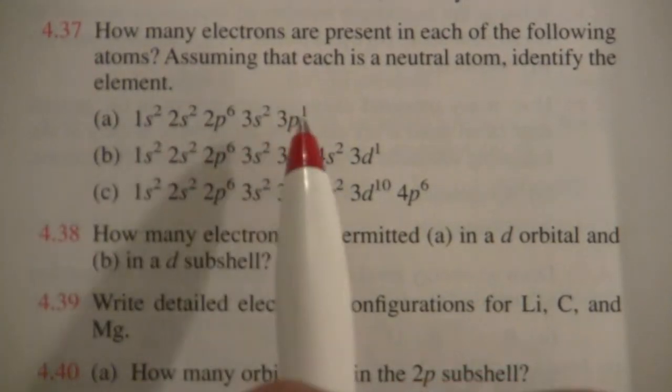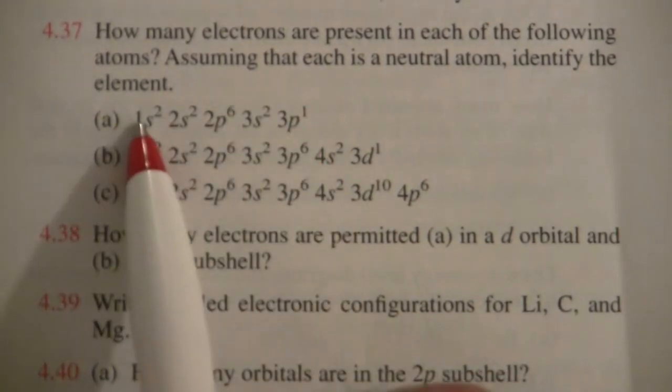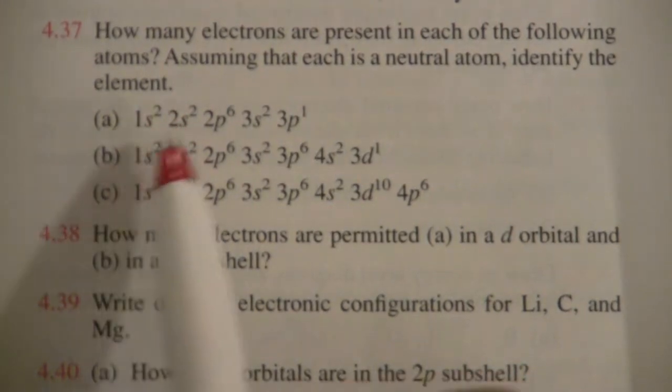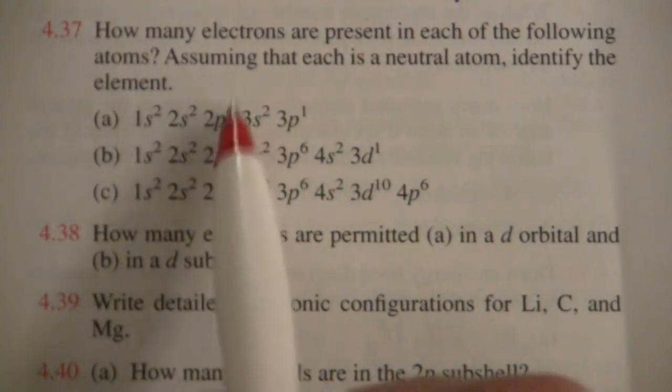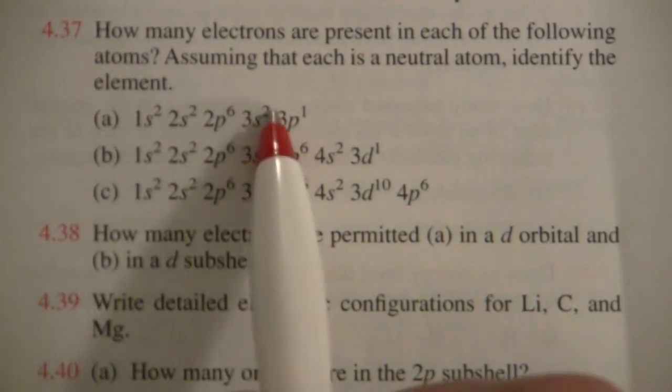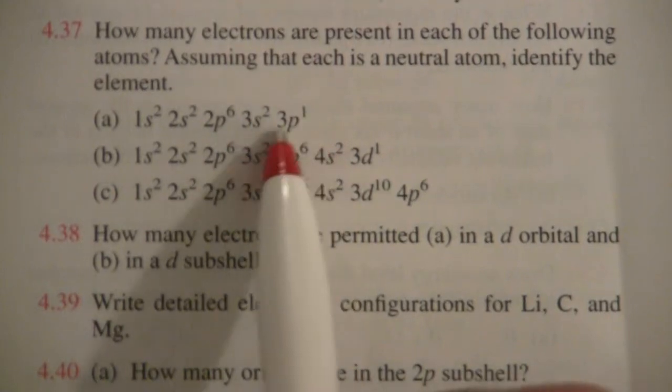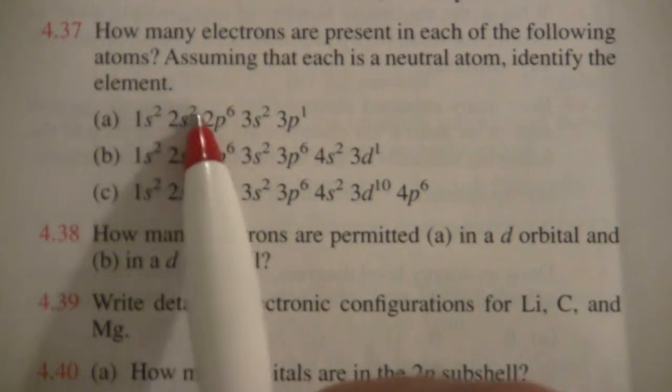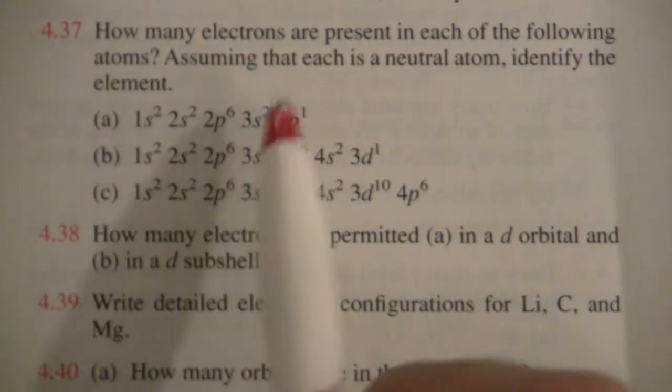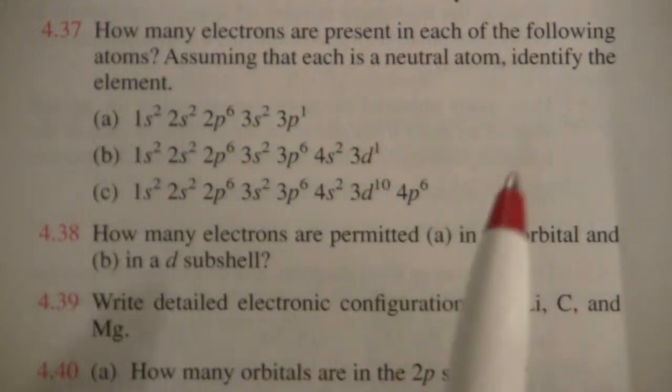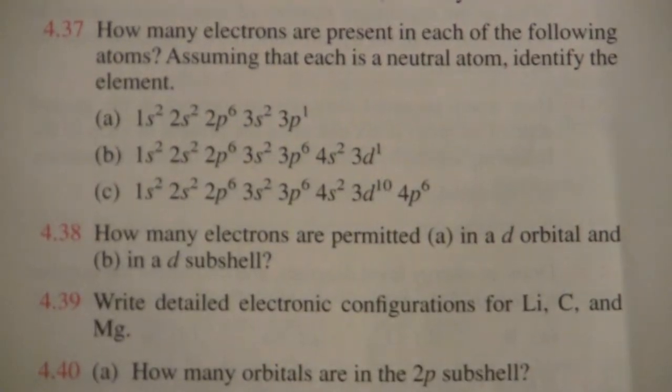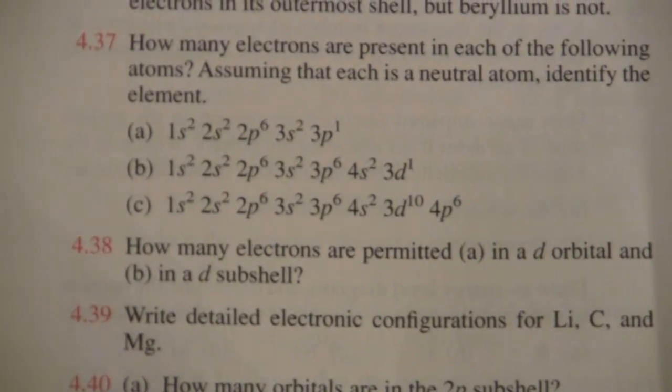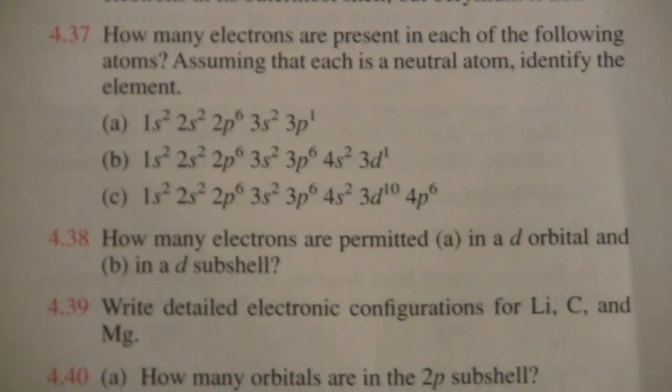Here's the electron configuration. What this is saying is in the 1s subshell, there are two electrons. Two electrons in the 2s, six electrons in 2p, two electrons in 3s, and one electron in the 3p. So you just count these up. Two, four, ten, twelve, thirteen. Total of thirteen electrons in that atom. And if you look on the periodic table, you find that that is aluminum.